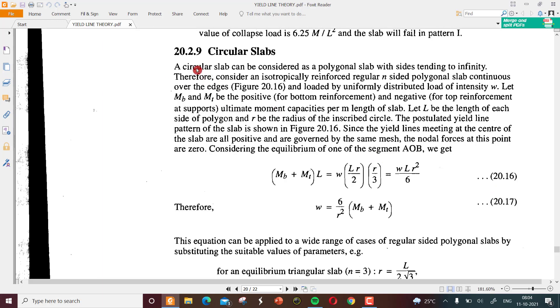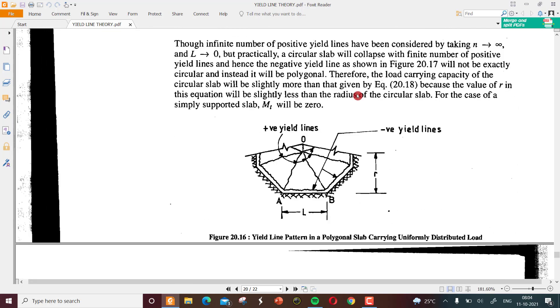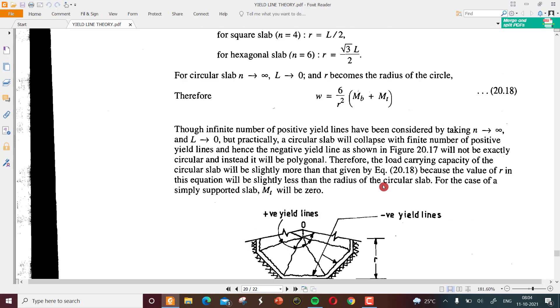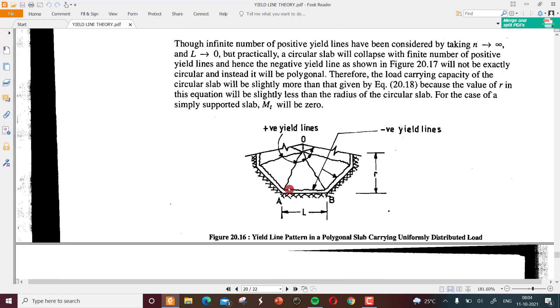Now we will have a look at the analysis of circular slabs. A circular slab can be considered as a polygonal slab with sides tending to infinity. Therefore, consider an isotropically reinforced regular n-sided polygonal slab continuous over the edges. Figure 20.16 is regarded as the circular one which is a combination of so many polygons.